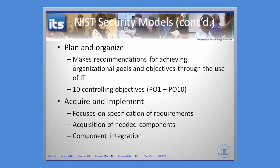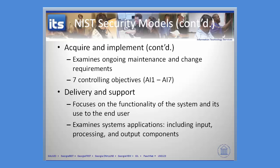Plan and Organize is your first domain. Acquire and Implement is going to be your second domain. You're looking at the specification of requirements, acquisition of those components, the component integration, and your ongoing maintenance and change requirements associated with that. So circling back: Plan and Organize has 10 controlling objectives, Acquire and Implement has 7 controlling objectives. We've got 34 total, and halfway through we've gone through 17.